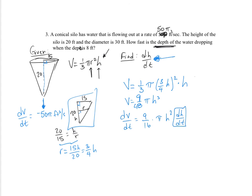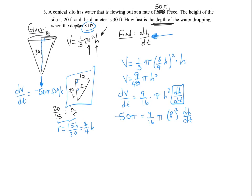We need to solve for dh/dt. Substituting dV/dt = negative 50 pi and h = 8 feet: negative 50 pi equals 9 sixteenths pi times 8 squared times dh/dt. The pi terms reduce out. 8 squared is 64, and 9 times 64 divided by 16 gives us 36. Solving, dh/dt = negative 25 over 18 feet per second.